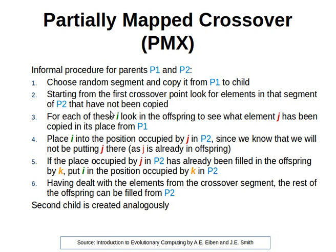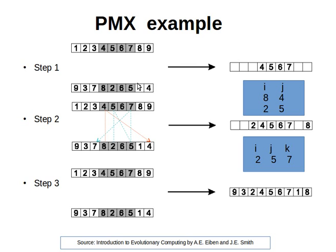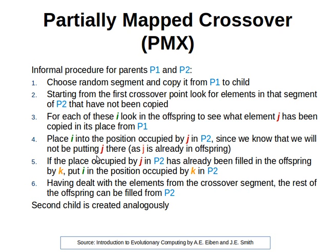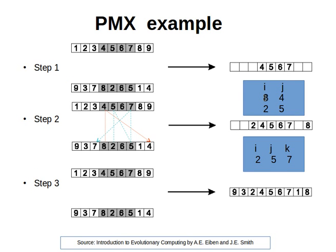So my I elements are 8 and 2. What we do now is try to find the corresponding elements in the offspring or the first parent. There's a mapping between 8 and 4, and a mapping between 2 and 5. So my J elements are 4 and 5. I is 8, it maps to J=4. I is 2, it maps to J=5. We place I in the position occupied by J in P2. For 8, J is 4 in P2 — 4 is there, we directly put 8 in place of 4, and 8 goes there directly because that place was not occupied.